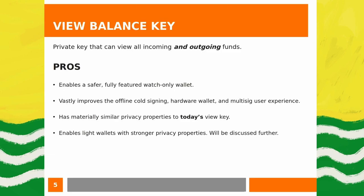First, the view balance key. This is a private key you could use to see all incoming as well as outgoing funds. Today in Monero, we have a view key and a spend key. The view key can only see all incoming funds but cannot cryptographically determine outgoing funds — for that you need the spend key, which is also used to spend your money.